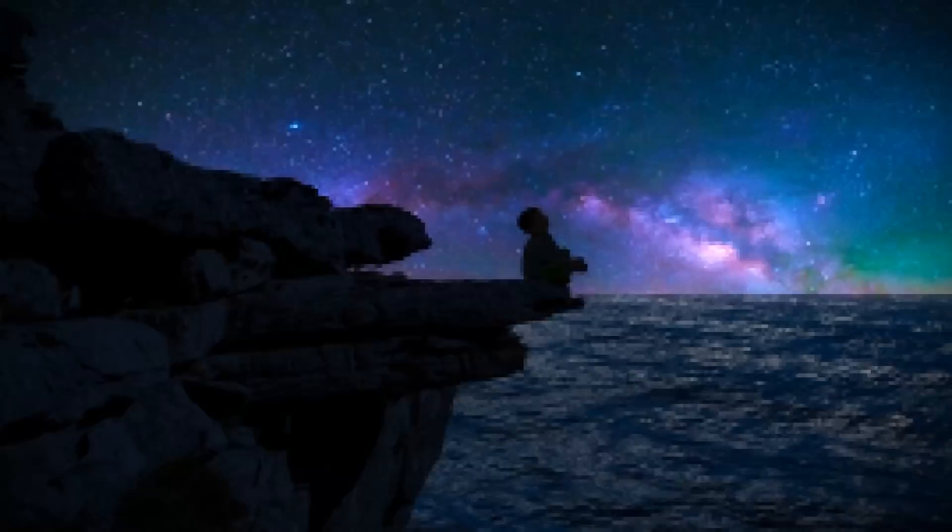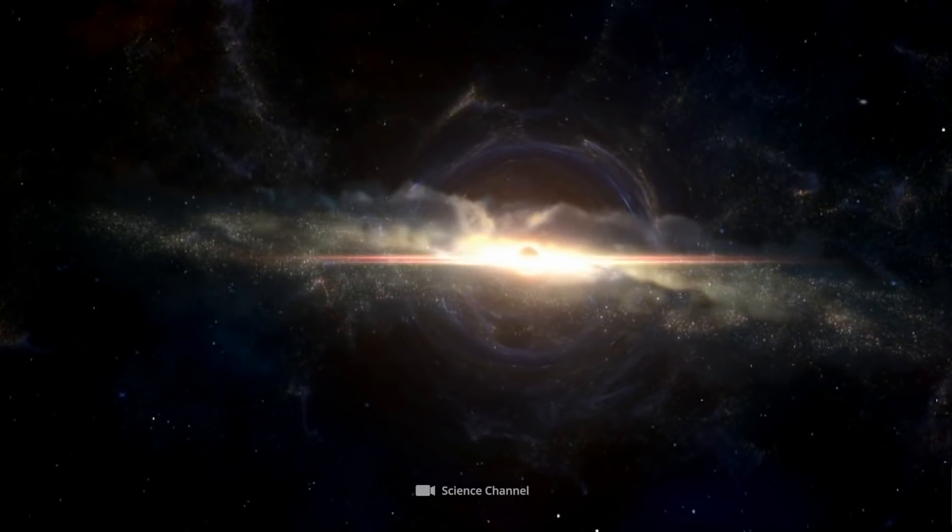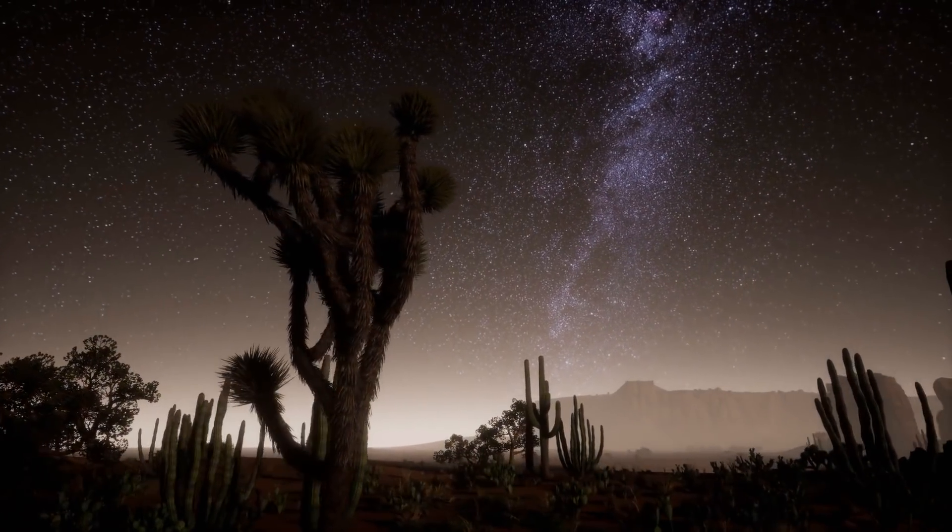This means that the structure always loses a part of its own mass by the radiation. For the external observer, it seems as if the black hole would practically evaporate, or in other words, slowly but surely become smaller.